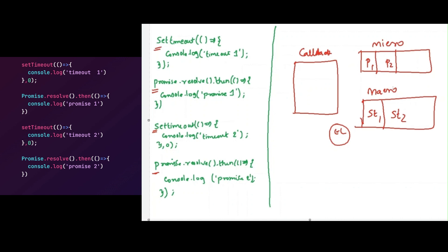The micro-task queue has higher priority than the macro-task queue, so the things present in the micro-task queue will be pushed into the call stack first. Promise 1 will be pushed and executed immediately, and 'promise 1' will be logged to the console. Then promise 2 will be pushed into the call stack and executed immediately, so 'promise 2' will be logged to the console.